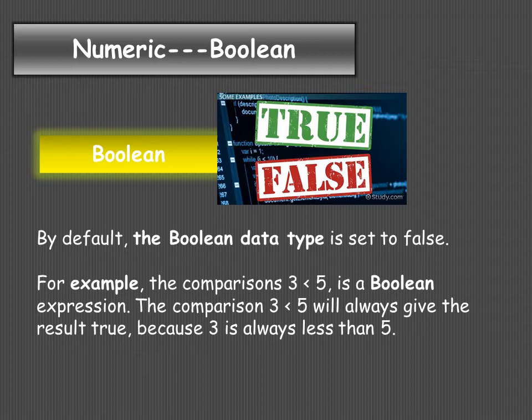For example, the comparison '3 is less than 5' is a boolean expression. This comparison will always give the result TRUE because 3 is always less than 5.